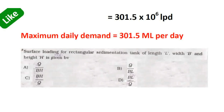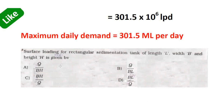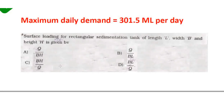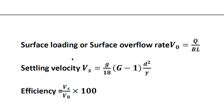We do not include height. Flow velocity is calculated as Q by BH. The first option Q/BH is flow velocity; the second option Q/BL is surface loading. Surface loading or surface overflow rate V₀ is equal to Q by BL. The sedimentation tank removes 40 to 70% of suspended solids.